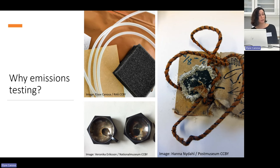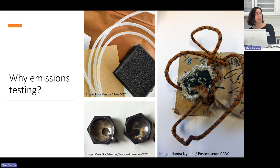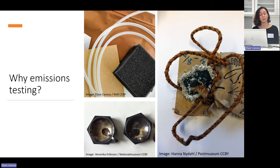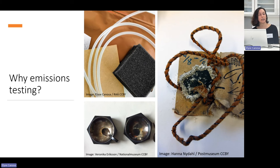For example, in this image on the bottom left, we have some silver bowls and a silver spoon from the National Museum in Stockholm that once were very shiny and silver-looking, but over time they have corroded. And in this image on the right, we have an example from the Post Museum in Sweden — a lead letter seal that has corroded over time, forming white fluffy corrosion products along the edges.